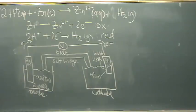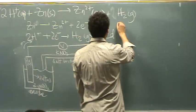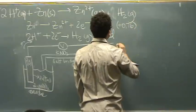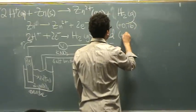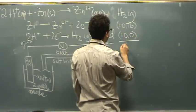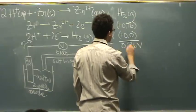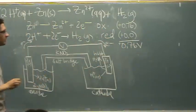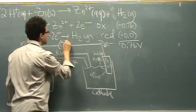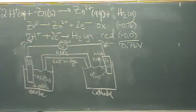In this case, if you look on your table, the zinc is negative 0.76 for the oxidation, or for the reduction, so it's positive 0.76 here. This is the standard hydrogen electrode, so it's zero, so the overall voltage is 0.76. So if you had a little voltmeter, it would be reading 0.76 volts.